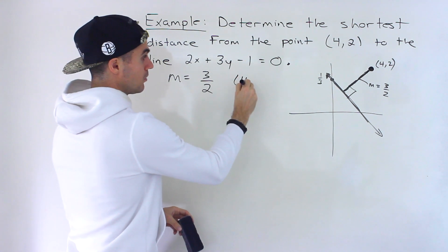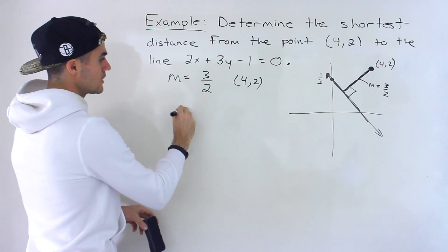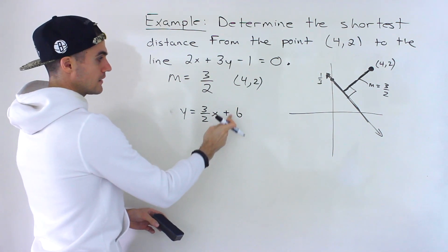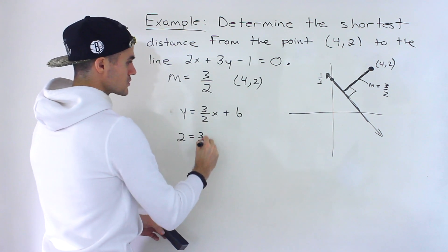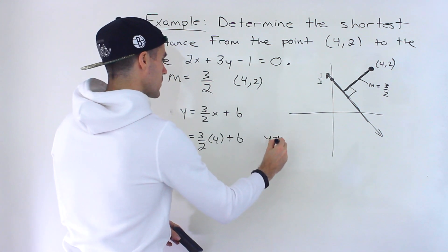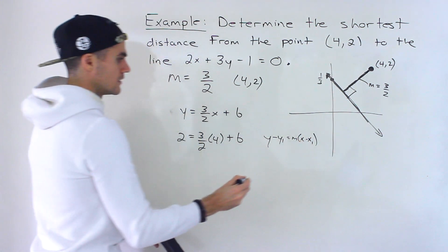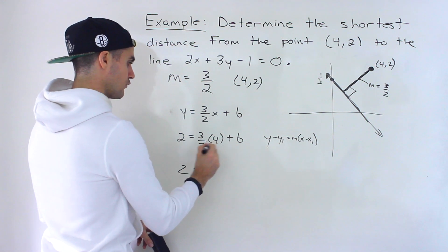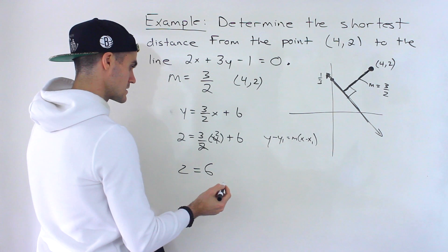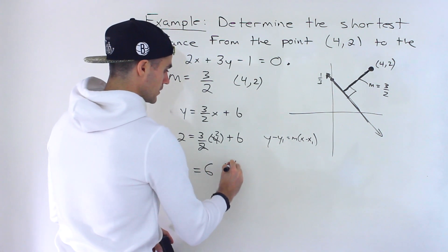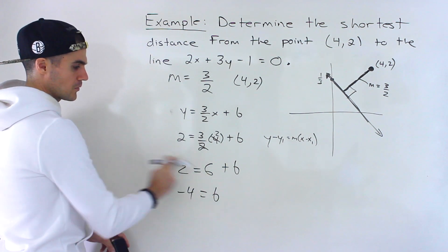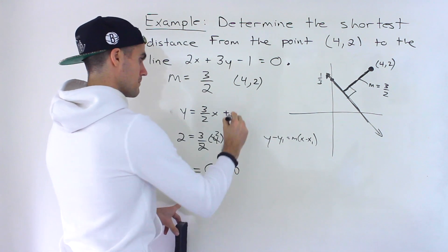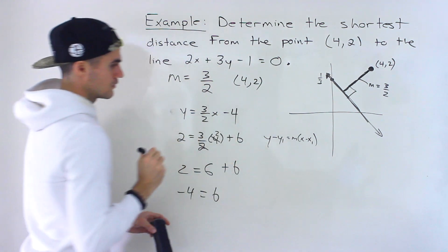We have slope 3/2 and the point (4, 2) on the perpendicular line, so we can find its equation. Starting with y equals 3/2 x plus b, plug in x equals 4 and y equals 2: we get 2 equals 3/2 times 4 — the 2s cancel giving 6 — so 2 equals 6 plus b, meaning b equals negative 4. The equation of the perpendicular line is y equals 3/2 x minus 4.